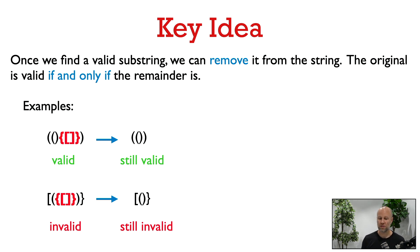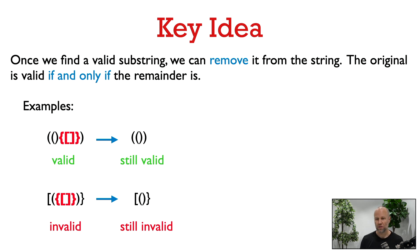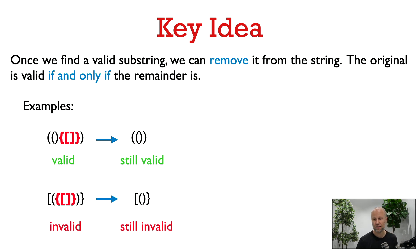Here are some examples to illustrate. In the first example, the bold red portion is a valid substring of the original, and after we remove it we still have a valid string. In the second example we have an invalid string; if I remove the bold red valid substring, after removing it we're left with an invalid string. So removing valid substrings preserves the property of being valid or invalid — and that's the idea our algorithm is going to exploit.